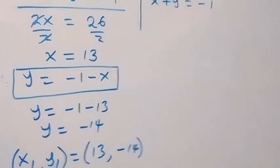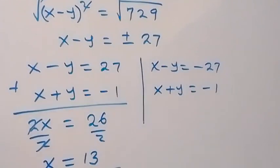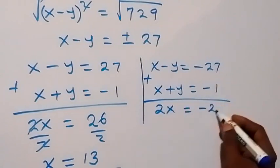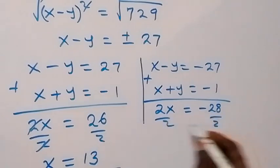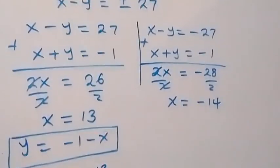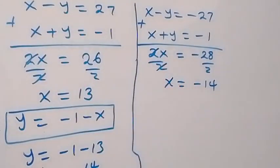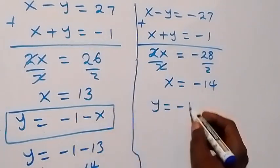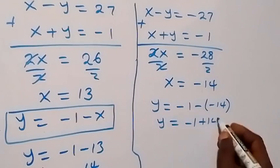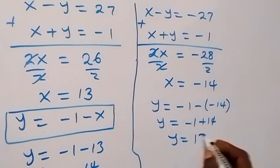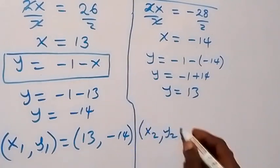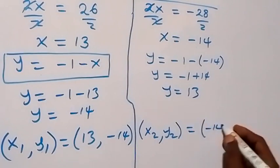Similarly, for the second case, solving x minus y equals minus 27 and x plus y equals minus 1 simultaneously by adding, eliminating y, we get 2x equals to minus 28, divide both sides by 2, so x equals to minus 14. Using y equals to minus 1 minus x, y equals to minus 1 minus minus 14, which is minus 1 plus 14, so y equals to 13. The second set of solutions is x2, y2 equals to minus 14 comma 13.